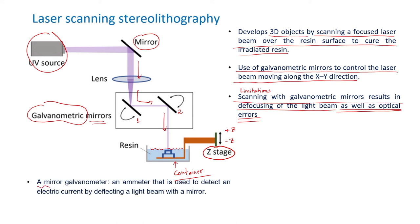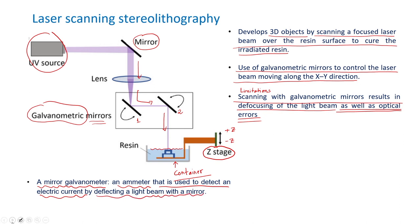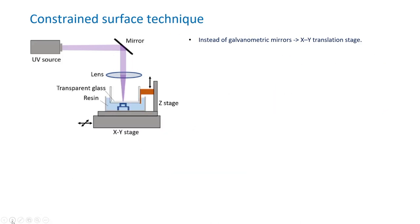The galvanometer is an ammeter used to detect electric current by deflecting a light beam with a mirror. The deflection occurs when the beam of light is projected on the mirror. The problem of defocusing and optical errors can be solved by making the laser beam stationary and moving the substrate instead.